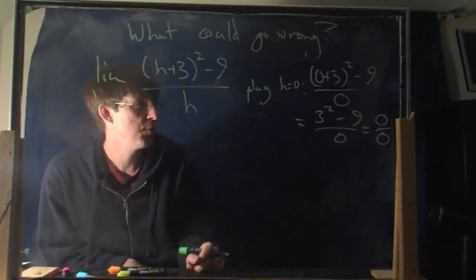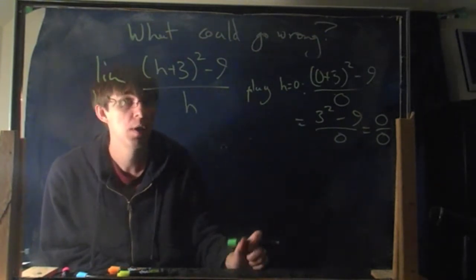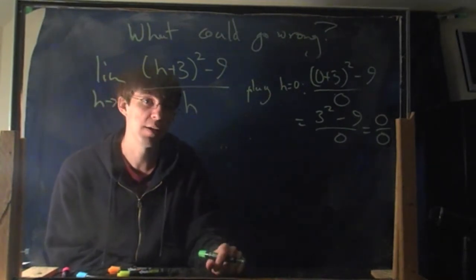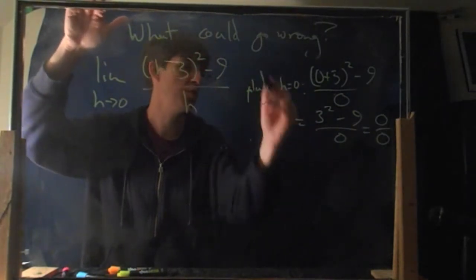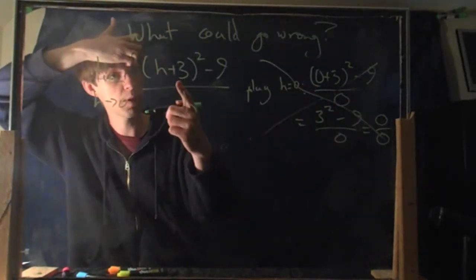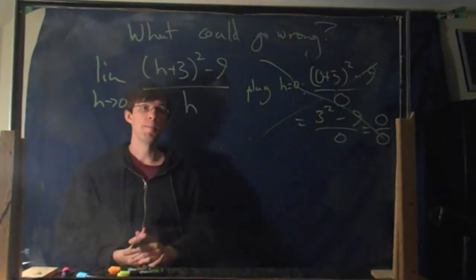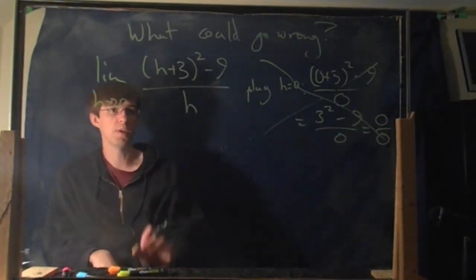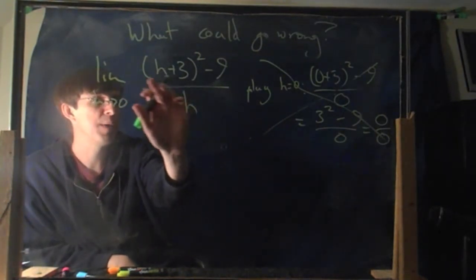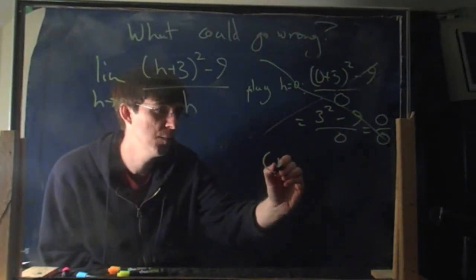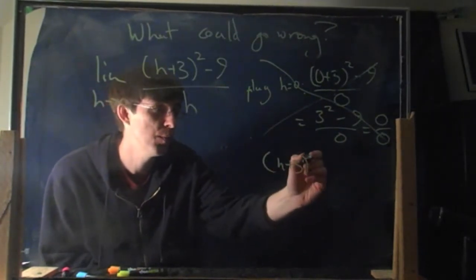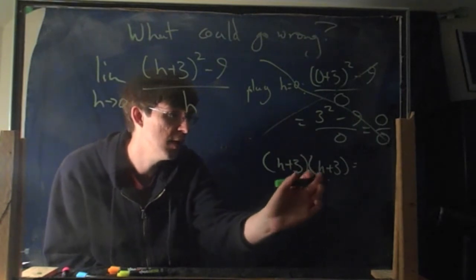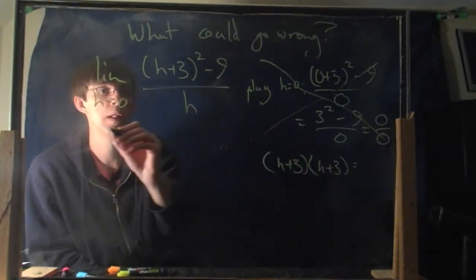This is the scenario I was just referring to. When you get 0 over 0, you've got to go back and simplify. What can you do to simplify? You should try to cancel what you can, but nothing can cancel immediately as written. What you can do is expand by doing the FOIL: (h+3)² = (h+3)(h+3), giving h squared plus 3h on the outside, plus 3h on the inside.